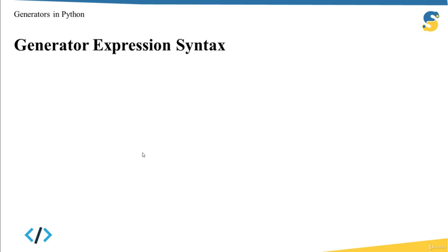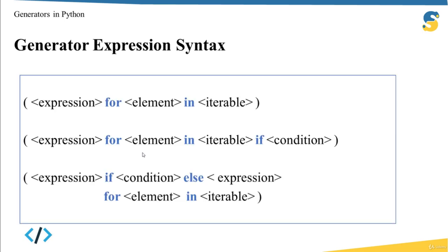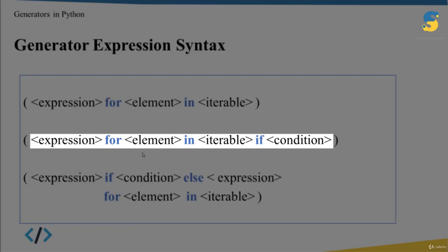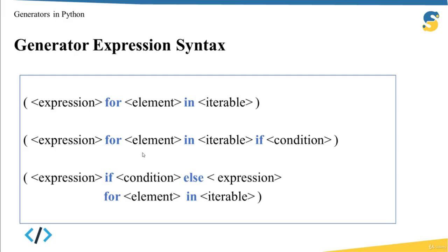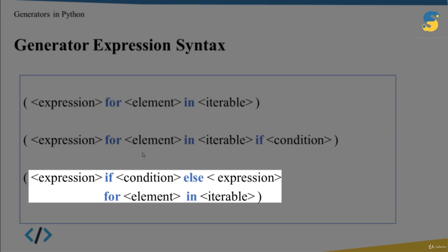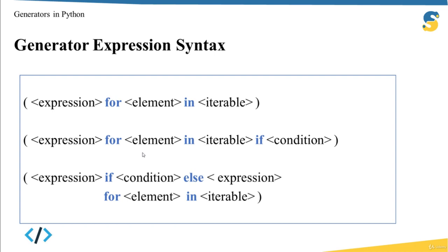There are three syntax forms for defining a generator expression. First: expression for element in iterable. Second: expression for element in iterable if condition. Third: expression if condition else expression for element in iterable. An important note: when using 'if' alone, it comes after 'for'; when using 'if/else', it comes before 'for'. The syntax is exactly like list comprehensions, but you use parentheses instead of square brackets or curly braces.